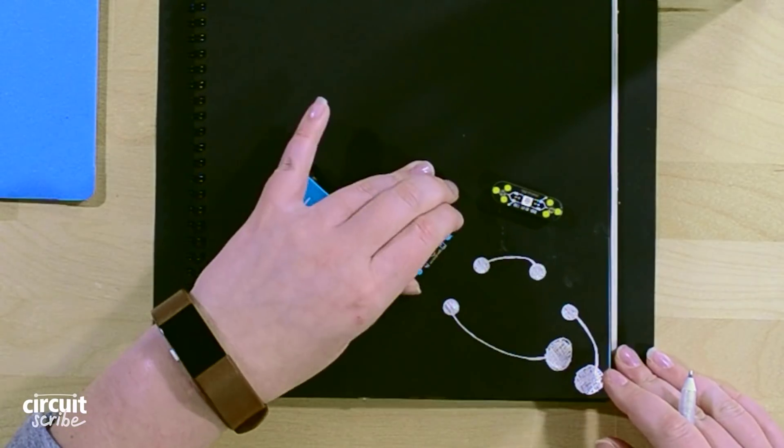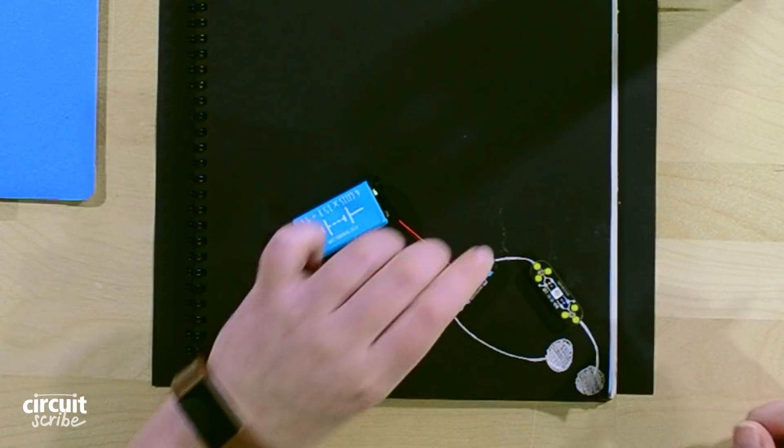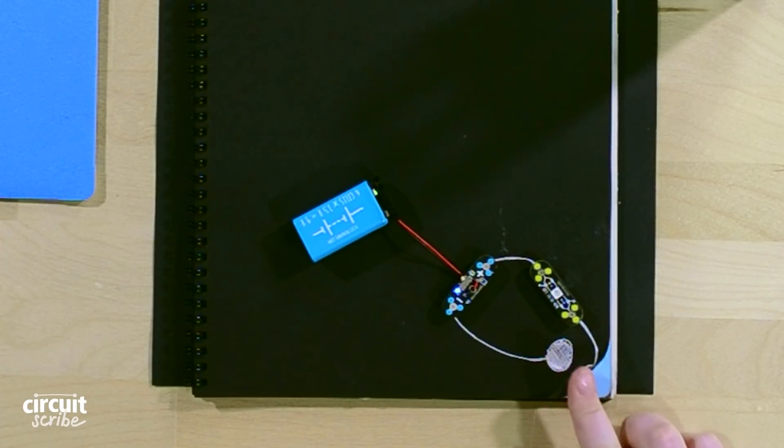And then I'll connect the other big dot to the negative of the battery, just like that. All right, let's put our modules in place. We're going to put our battery down, our LED down, switch on the battery, and then let's connect our paper switch.